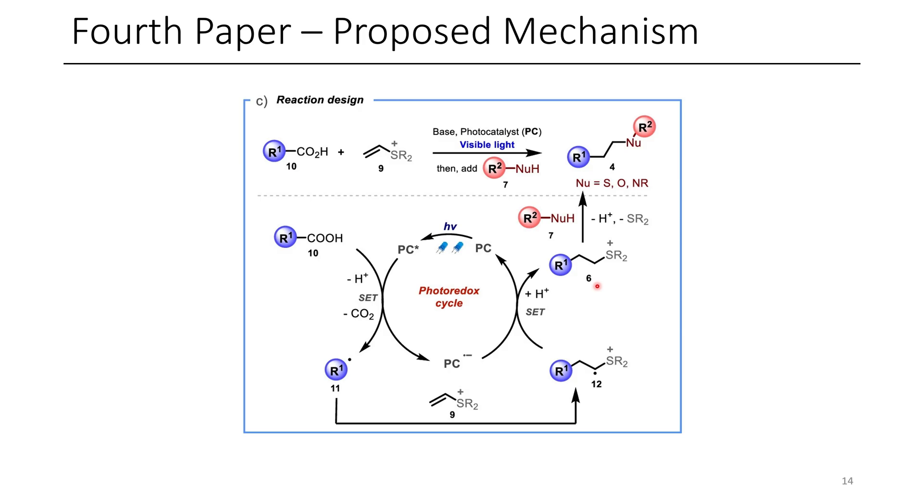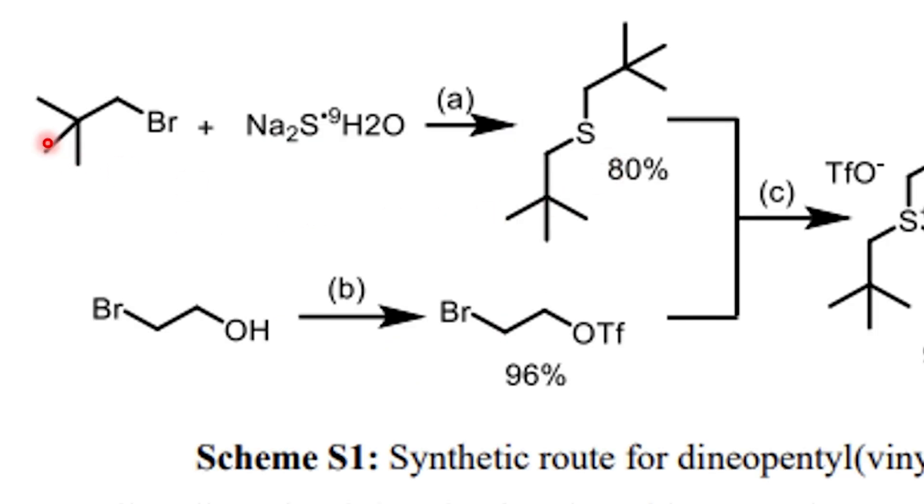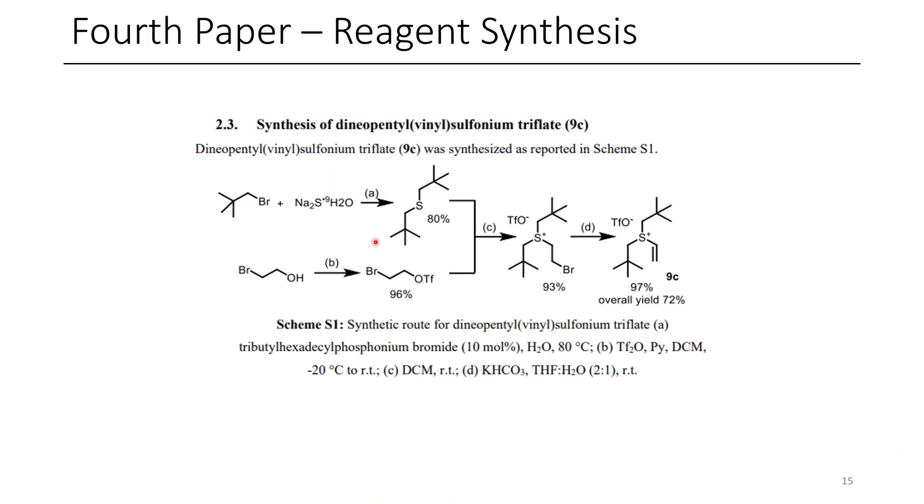What I really want to highlight is the utility of this leaving group. So the authors report in their SI how they synthesize this. They use bis-neopentyl sulfide. Apparently, you can do a substitution at a neopentyl center, as long as you have a sulfur nucleophile. They take this bis-neopentyl sulfide, alkylate it with bromoethyl triflate, and through the displacement of the triflate, and subsequent elimination with potassium bicarbonate, they're afforded with their vinyl sulfonium triflate 9C. The main thing I took away from this is you can displace a triflate with bis-neopentyl sulfide, and then displace this with various different nucleophiles of interest.